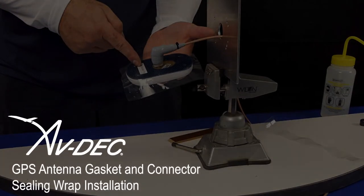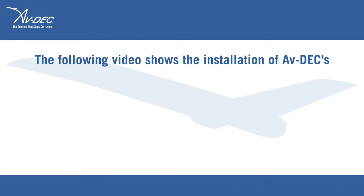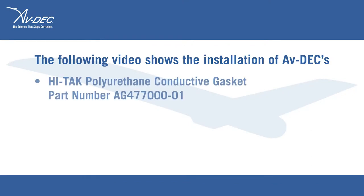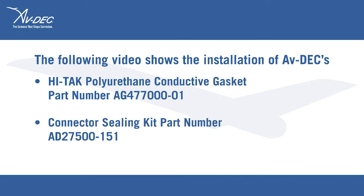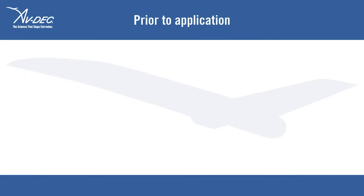GPS antenna gasket and connector sealing wrap installation. The following video shows the installation of Avdex Hi-Tac Polyurethane Conductive Gasket part number AG477000-01 and connector sealing kit part number 827500-151 prior to application.